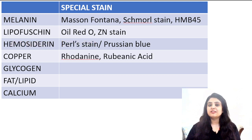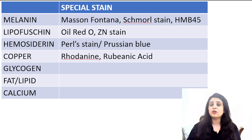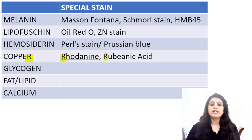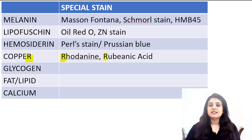Coming to the next pigment, that is copper. I think everyone knows that when I am talking about copper, I am talking about a disease called Wilson's disease. How would we learn copper? Copper ends with an R and the names of the stains are going to begin with an R — that is rhodanine and rubianic acid. RRR, a very famous movie! Coming to the next one: glycogen.